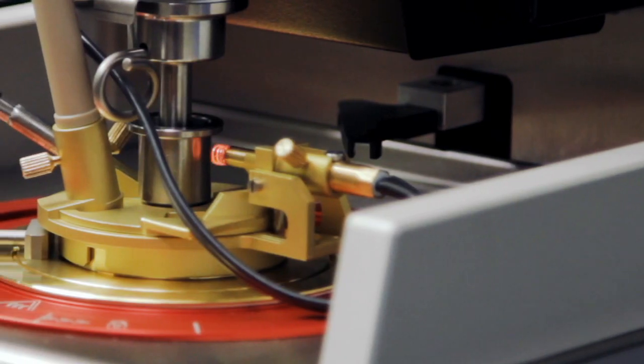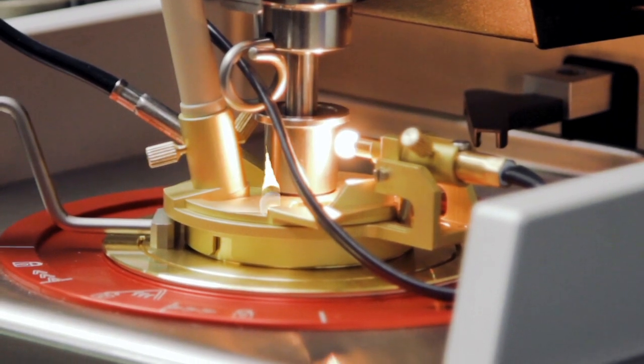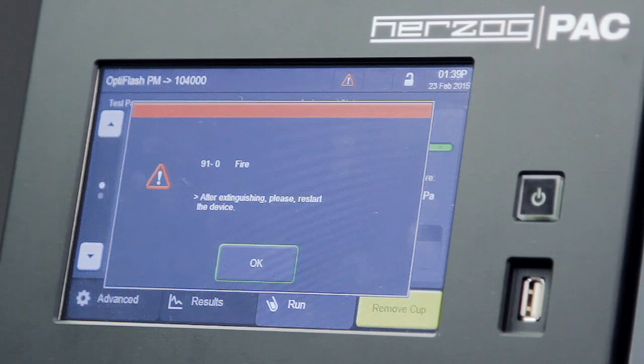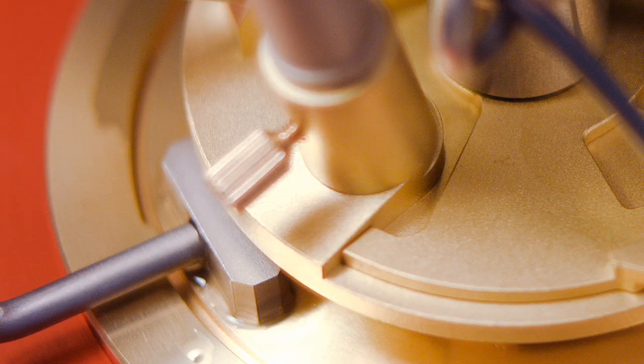When running a flashpoint test, it is possible for a flash to occur outside the test cup. When this happens, OptiFlash's safety monitoring system aborts the test and closes the shutter to eliminate the flame without activating the fire suppression system.